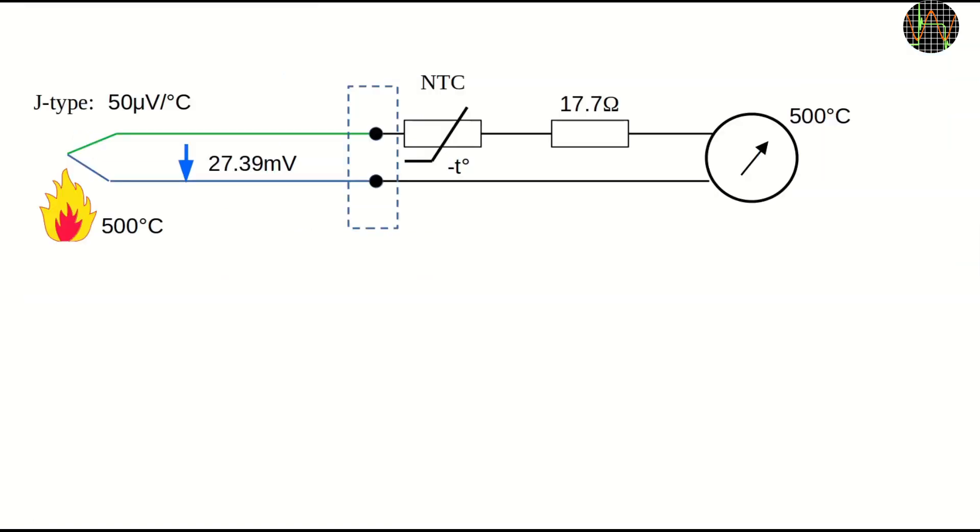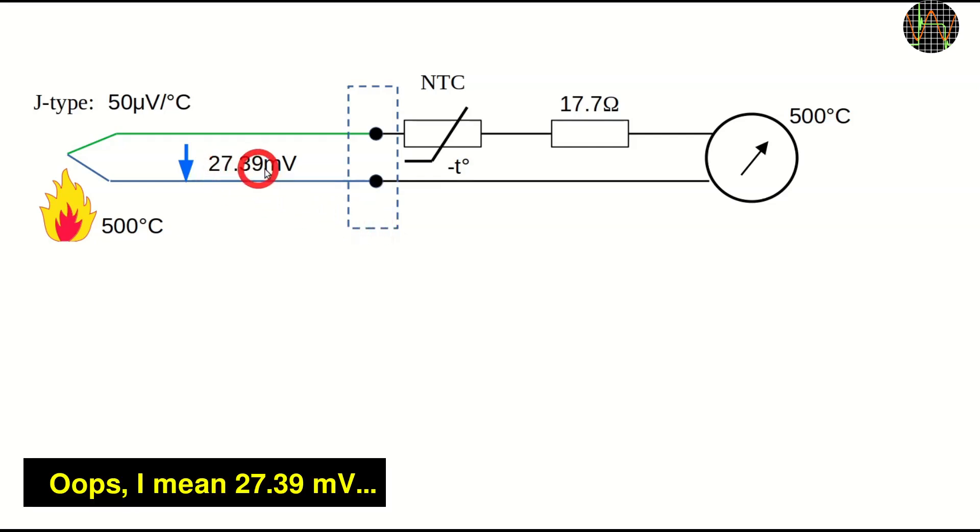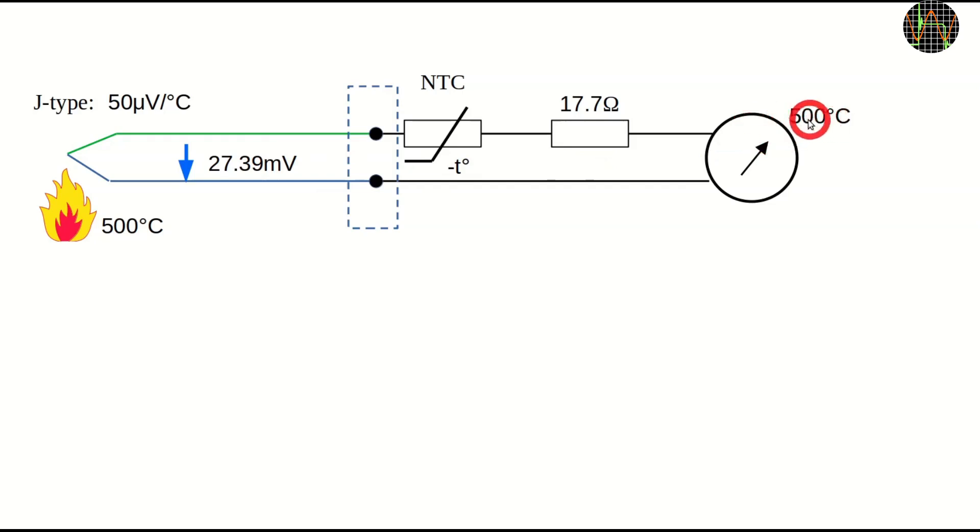The probe would deliver, I guess, 23.39 mV and the instrument would show full scale. If the ambient temperature is higher, like room temperature, the no-longer-so-cold junction would produce a negative voltage so that the overall voltage seen by the instrument is lower, resulting in a lower readout.